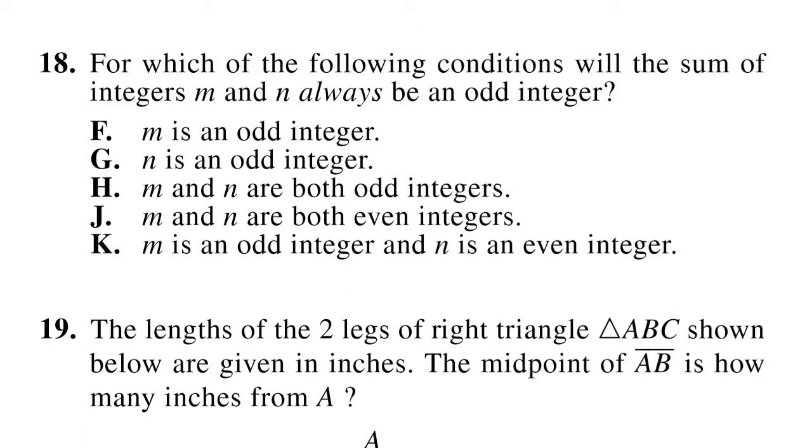Number 18, for which of the following conditions will the sum of integers m and n always be an odd integer? If m is an odd integer, well, let's try that out. So maybe m is 3, but n is 1. Another odd integer. 3 plus 1, that's 4. Okay, well then that's not true because that's not always going to be an odd integer. We could have also tried 3 plus 3. That equals 6. What if we did an even number? We did 3 plus 2. That equals 5. That's an odd integer, so that one works. So if we were only to try this combination, we might be tricked into thinking that's the correct answer. But we know that it works if both of them are odd integers. And G, we would run into the same problem as F.